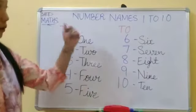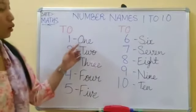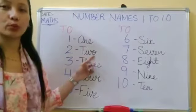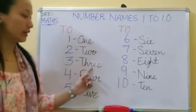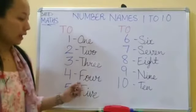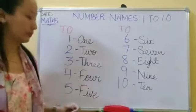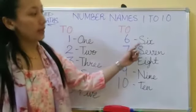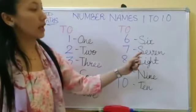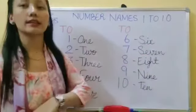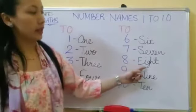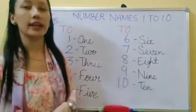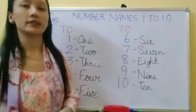Now again, let's recall number names from 1 to 10: O N E — 1, T W O — 2, T H R E E — 3, F O U R — 4, F I V E — 5, S I X — 6, S E V E N — 7, E I G H T — 8, N I N E — 9, T E N — 10.